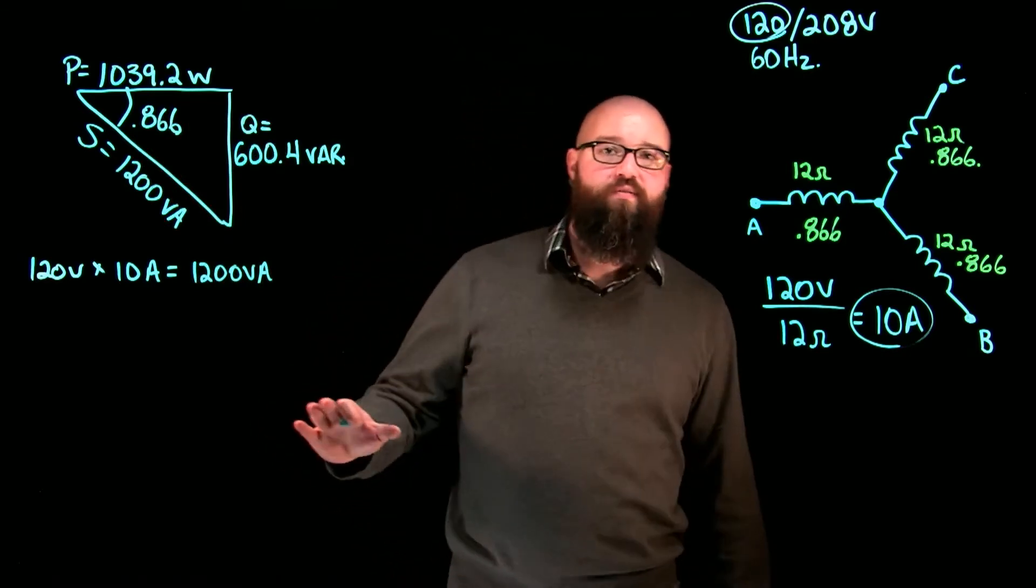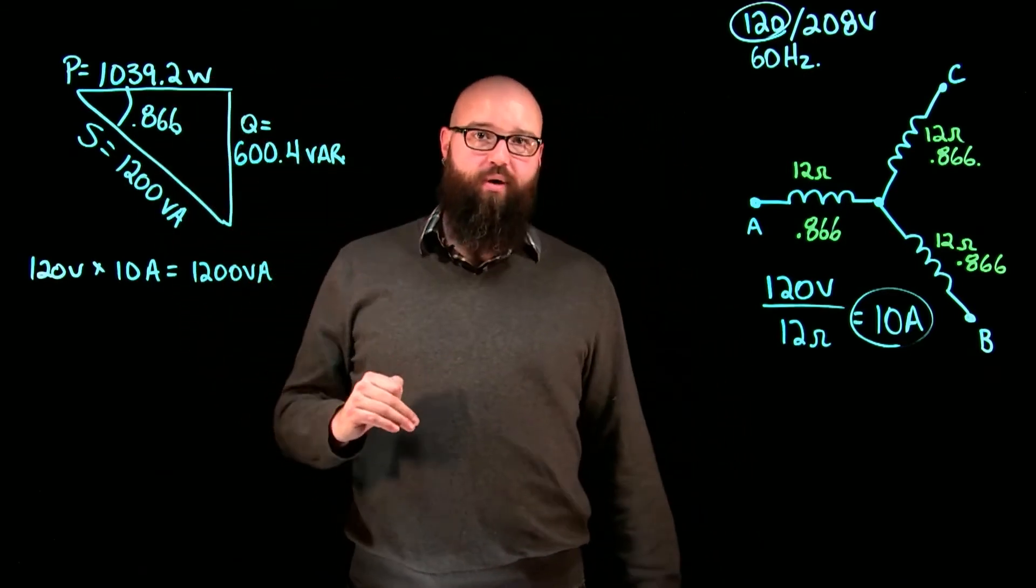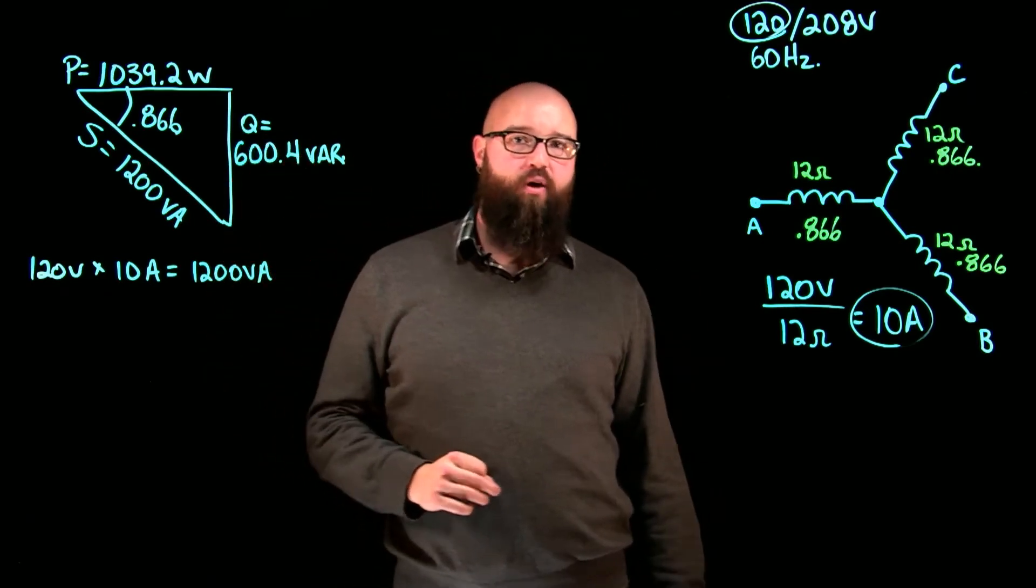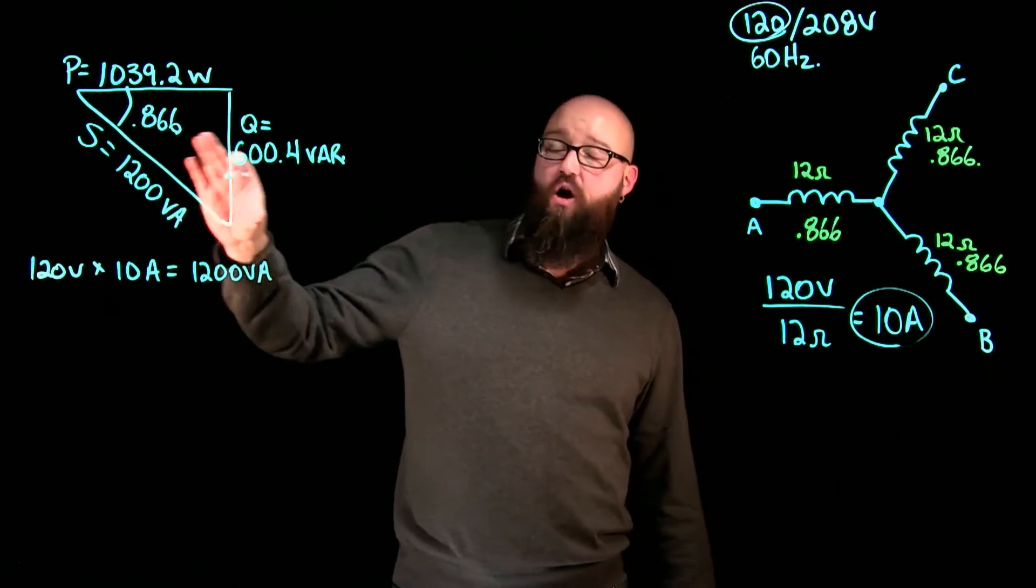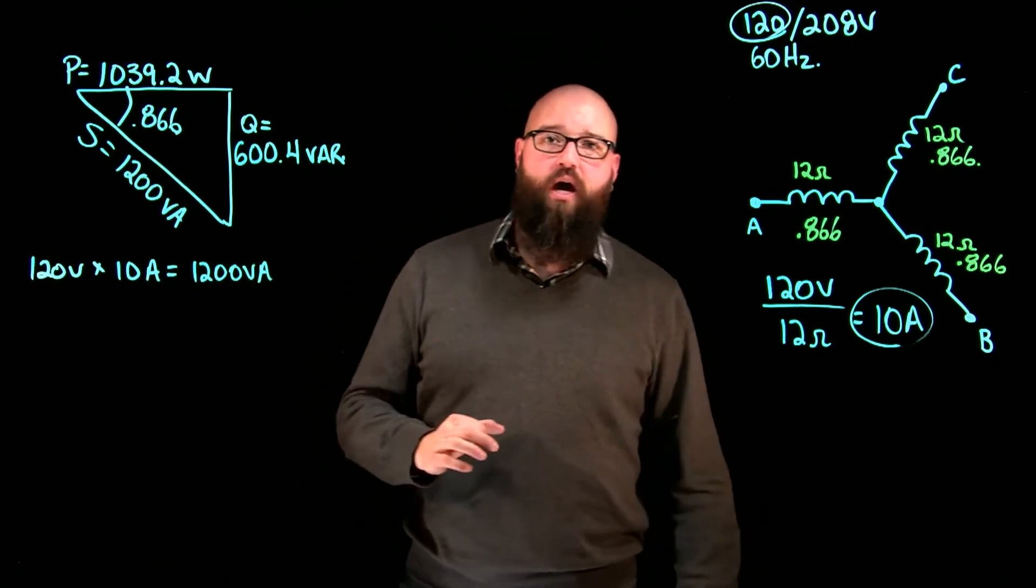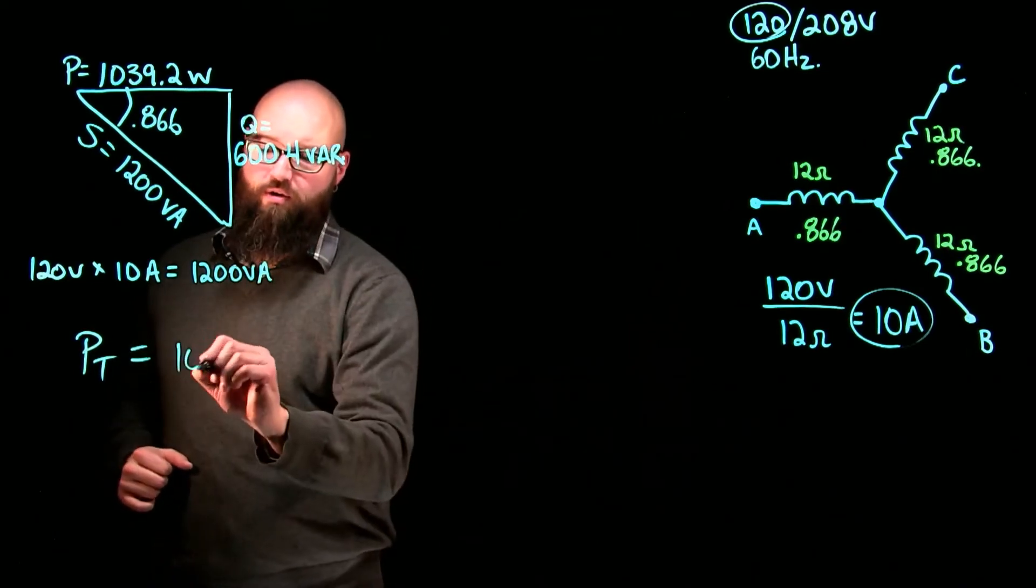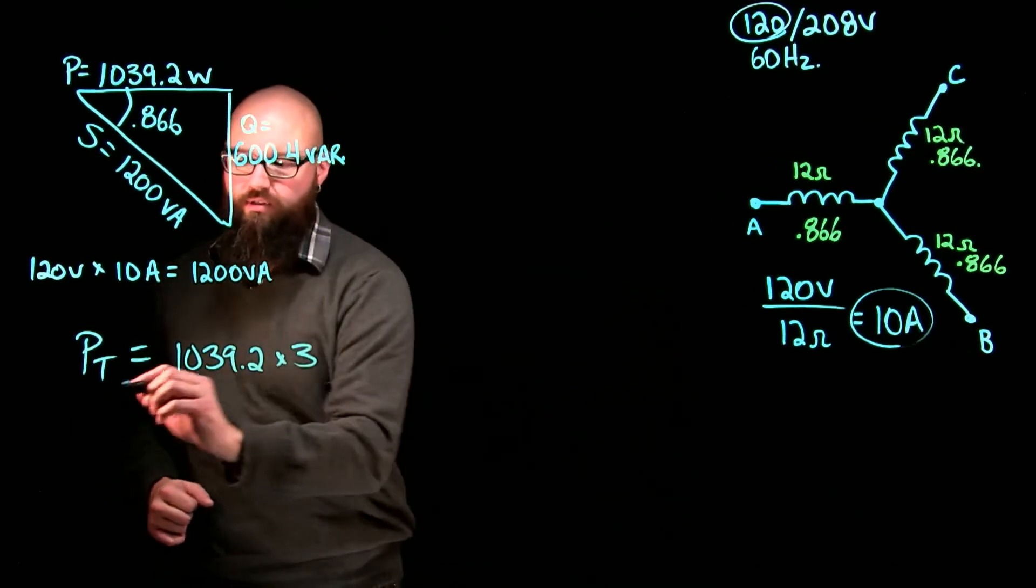In the previous video we said that we could add all power together to get a total power and that's true. We could add all reactive power and get a total reactive power and that's true. In this particular example as well we could take all of our apparent power and add those up. I'm going to save time and just do power total equals 1039.2 times 3.